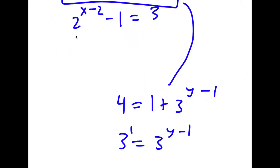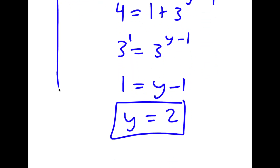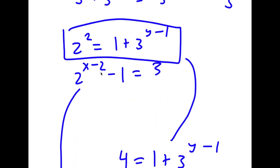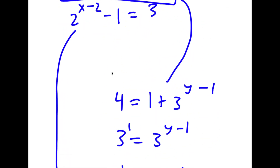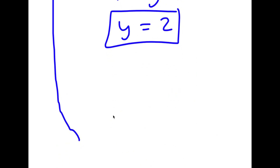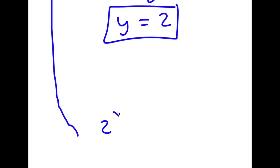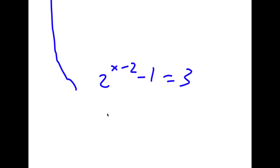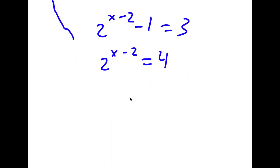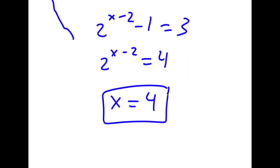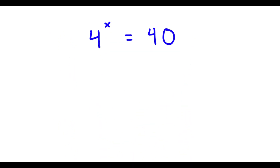For the second equation, 2 to the power of x minus 2 minus 1 equals 3, meaning 2 to the power of x minus 2 equals 4. Since 4 is 2 squared, x minus 2 equals 2, so x equals 4. Therefore x equals 4 and y equals 2.